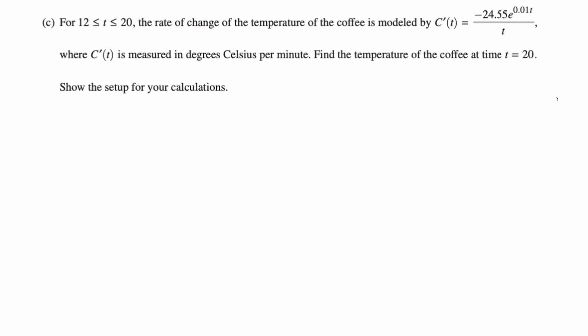Okay, part C says for 12 to 20, the rate of change of the temperature of the coffee is modeled by C'(t), which is negative 24.55 e to the 0.01t over t, where C'(t) is measured in degrees Celsius per minute. Find the temperature of the coffee at t equals 20. Show the setup for your calculation.